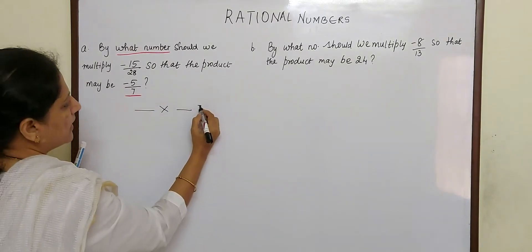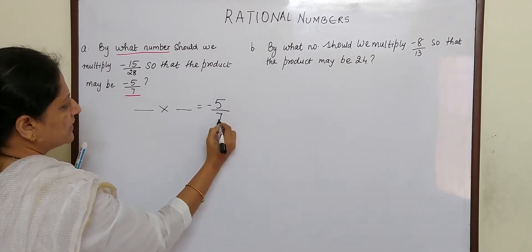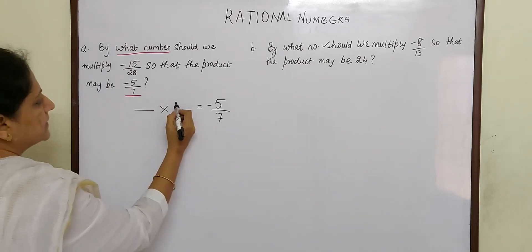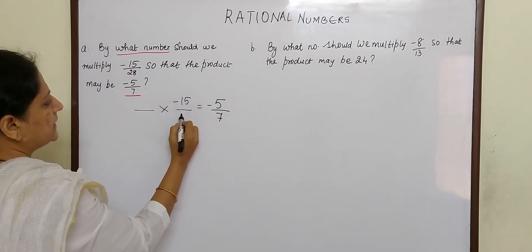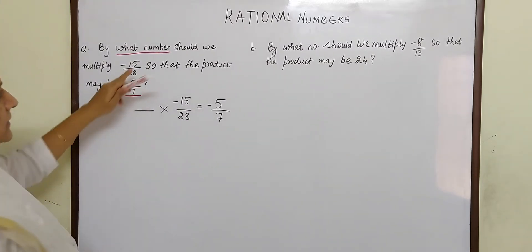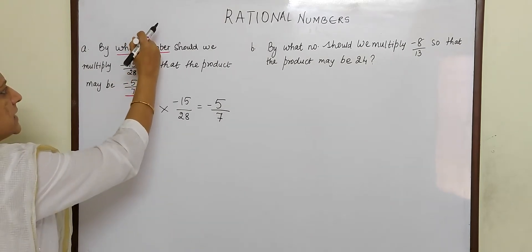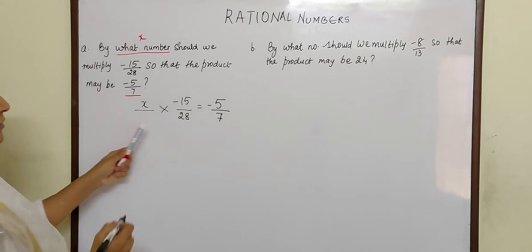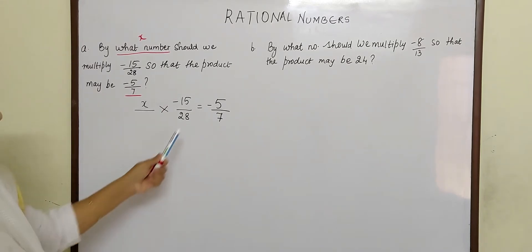That means the answer is -5/7. In this product, one is given, that is -15/28, and the other is not given. So let us take that number as x. That means x into -15/28 is equal to -5/7.